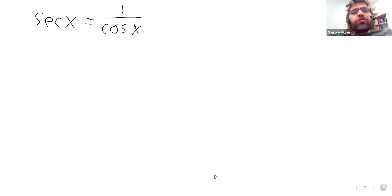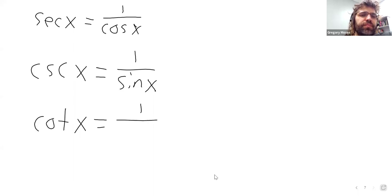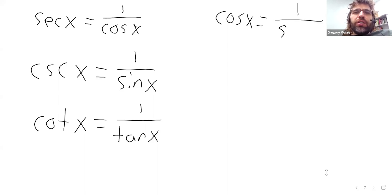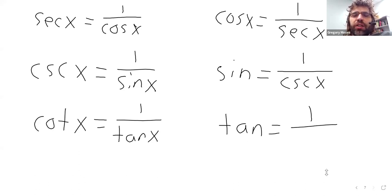But it's also an equality that's true for every value of x. So you can think of this as being an identity, if you want to. Then the cosecant, then the cotangent. And we could also write that the cosine is 1 divided by the secant, the sine is 1 divided by the cosecant, and the tangent is 1 divided by the cotangent.